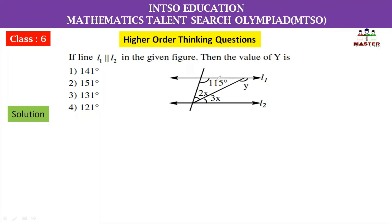Now we have a figure. In this figure, line L1 and L2 are parallel. We intersect the parallel lines with two lines. If we find the value of Y, then the parallel lines will intersect at two distinct points. The line M is a transversal.